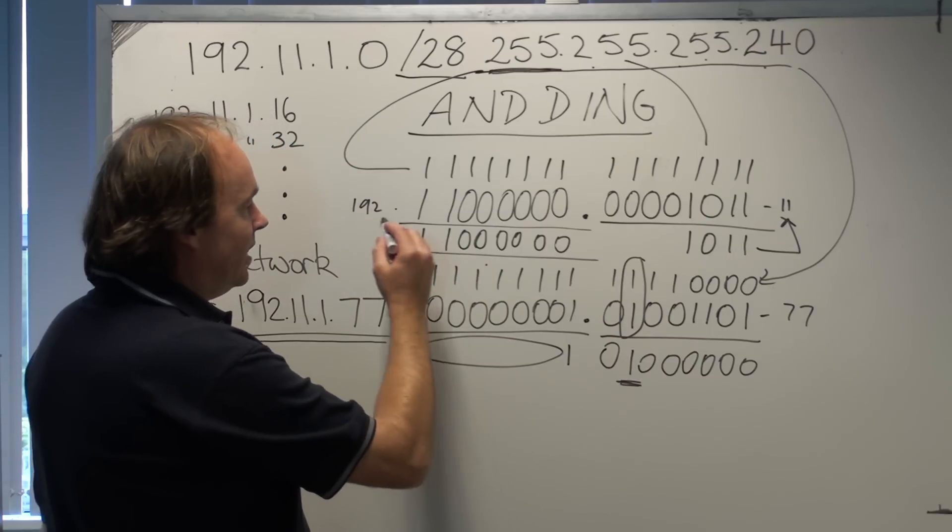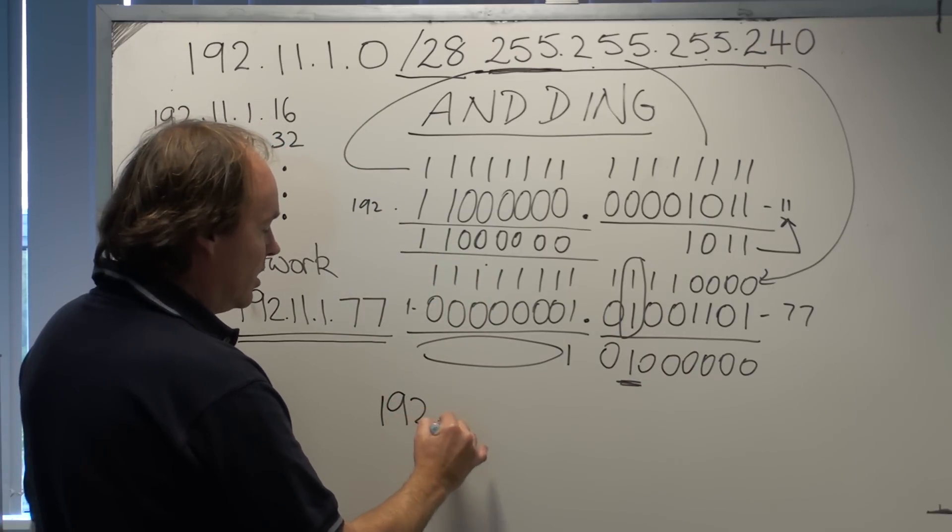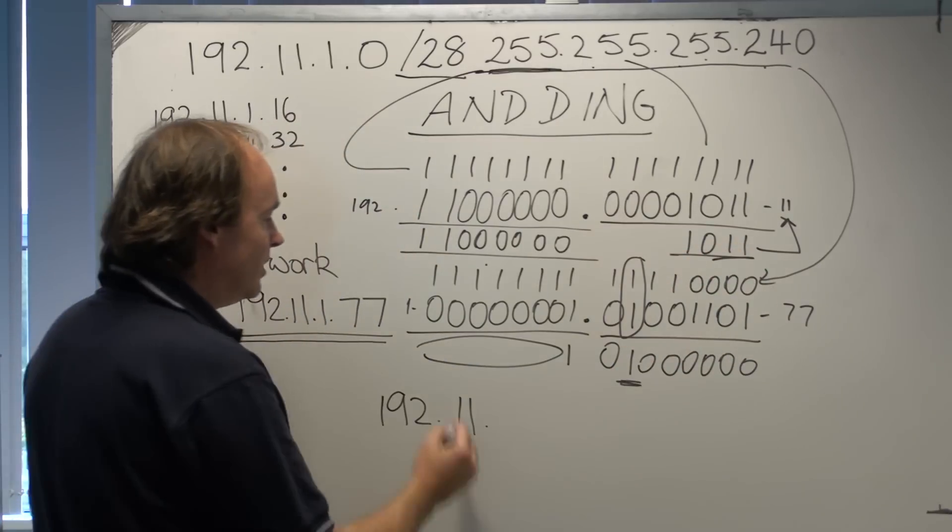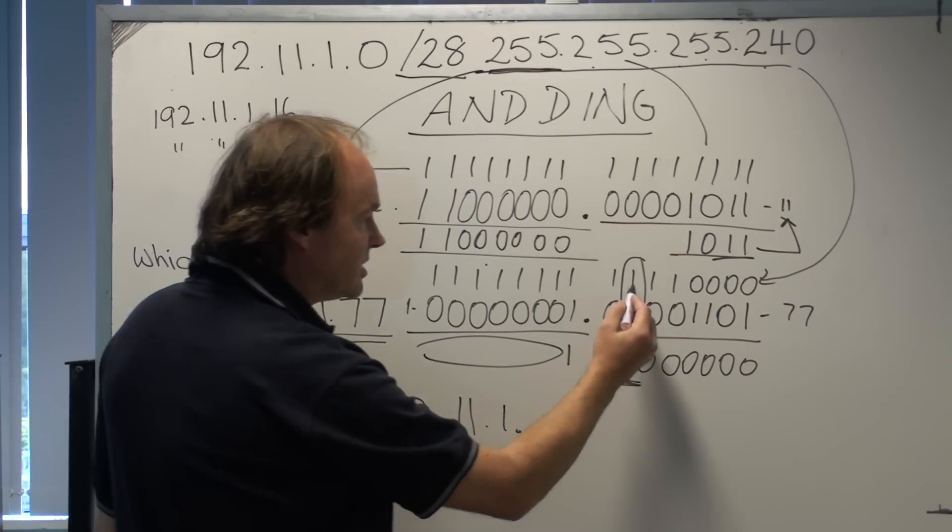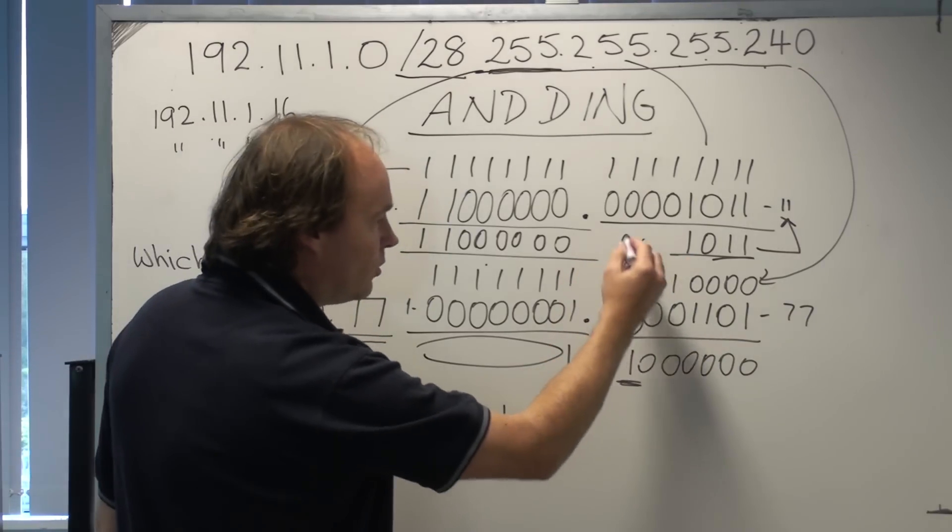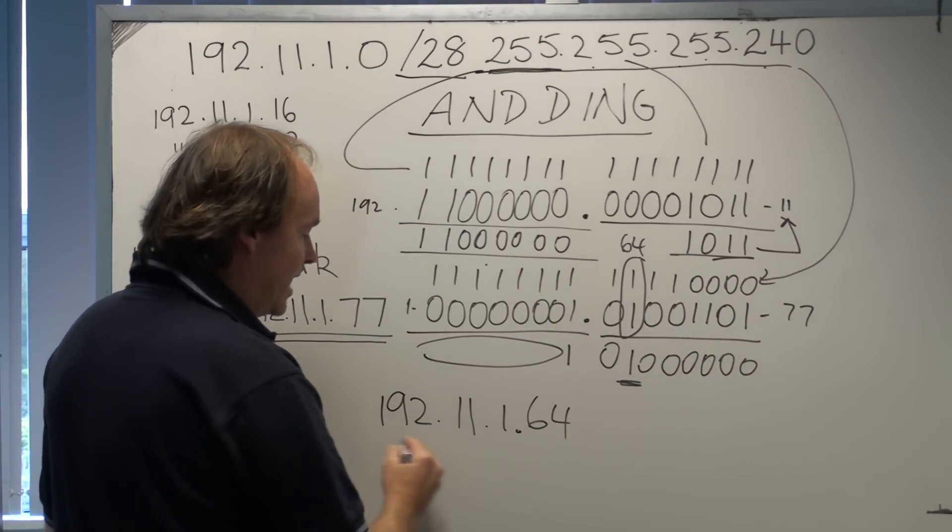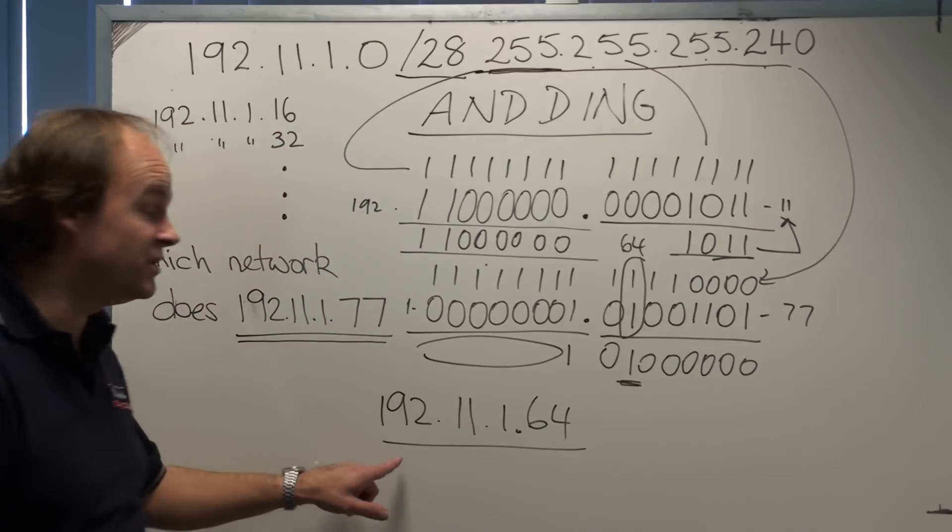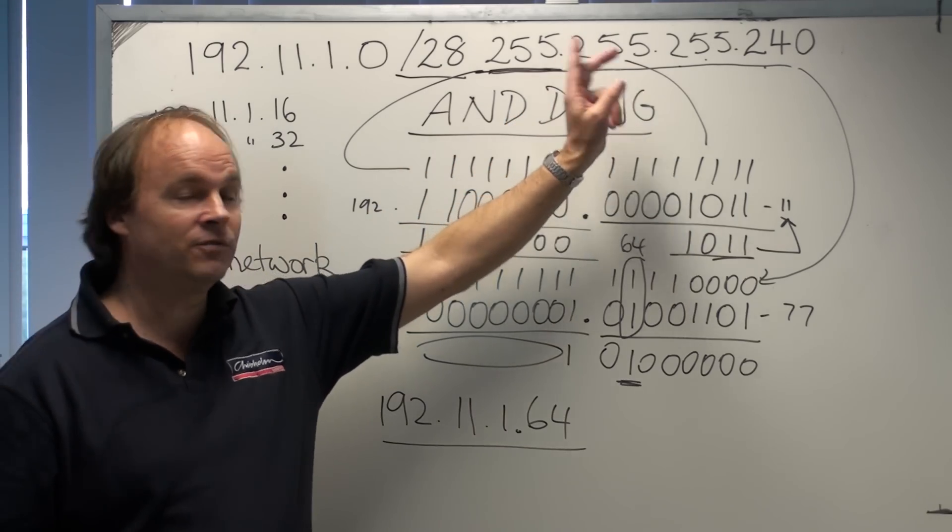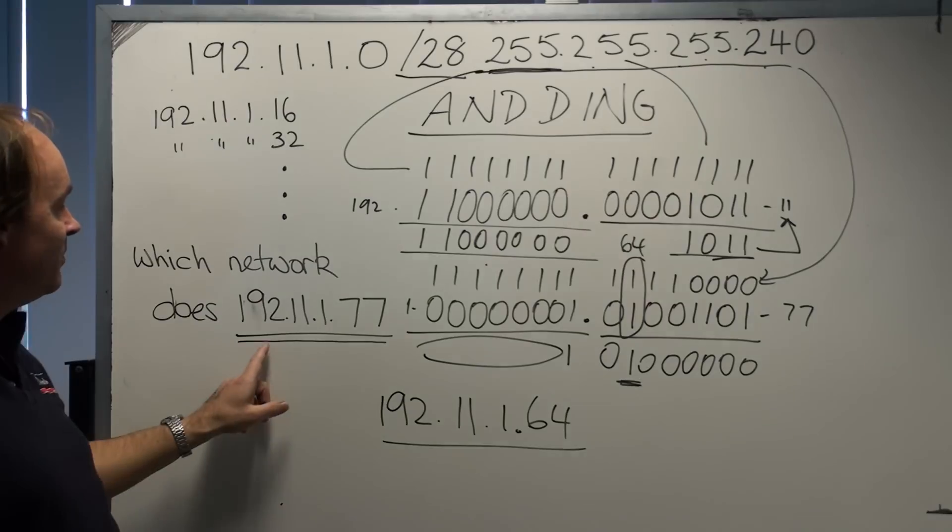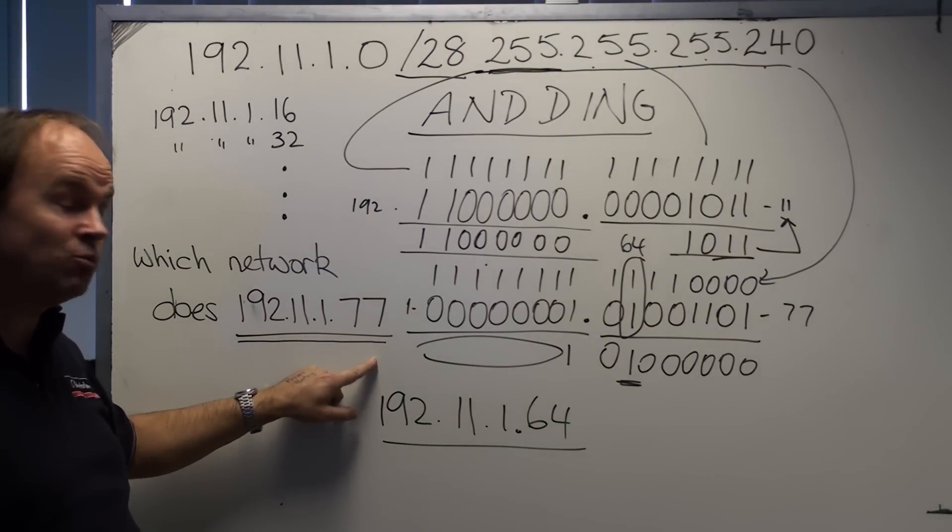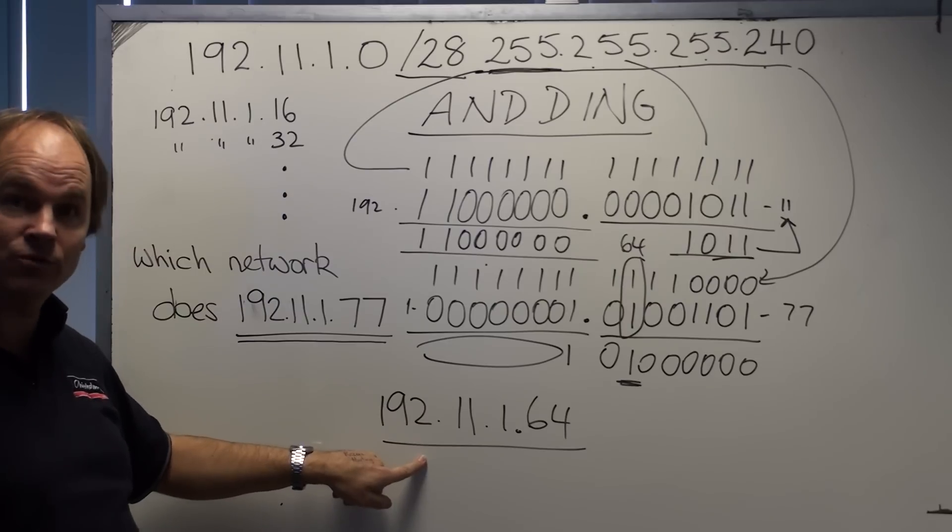So what falls out of here is a value of 192, 11, 1, and in this case 64. So what the router deciphers out using the mask 255.255.255.240 in conjunction with an incoming packet with a destination address of 192.11.1.77 is this, and that's a network ID.